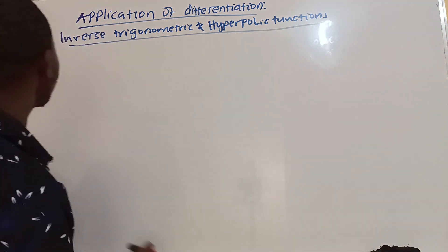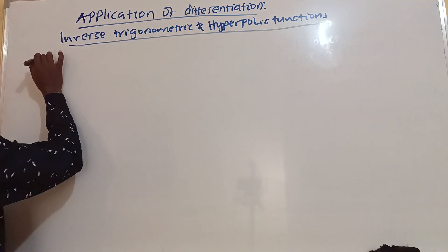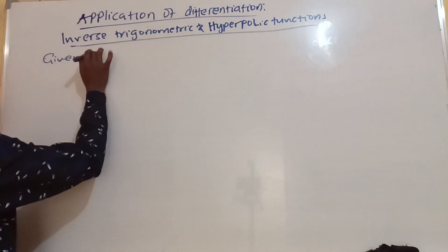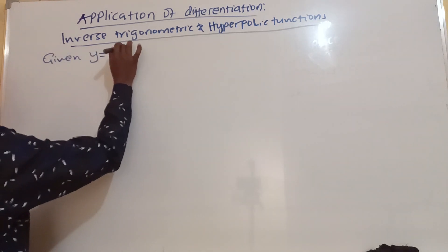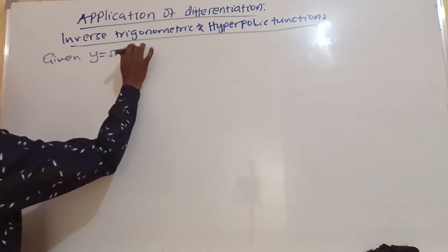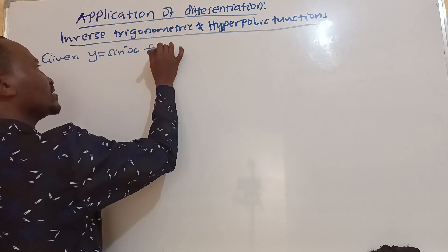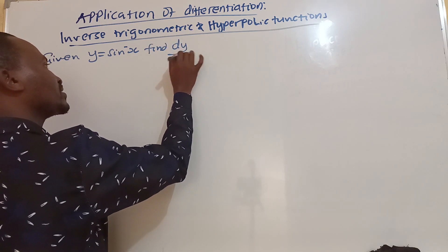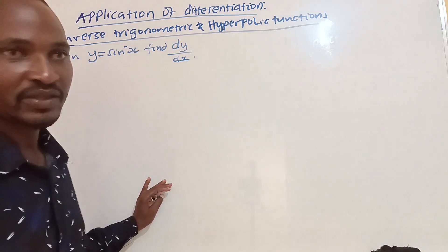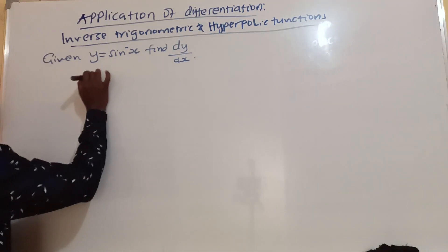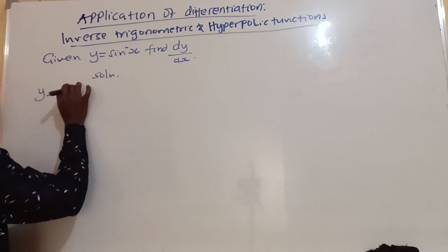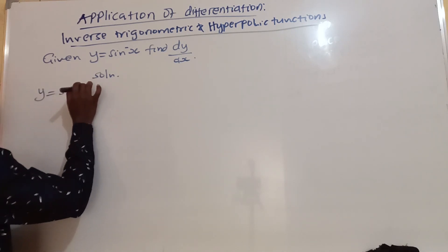Maybe we should consider this to be a question. First, we are told: given y is equal to sine inverse x, find the derivative of y with respect to x. So what we do, we say y is equal to sine inverse x.